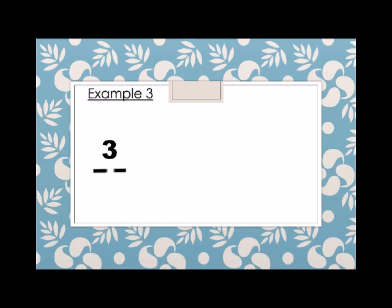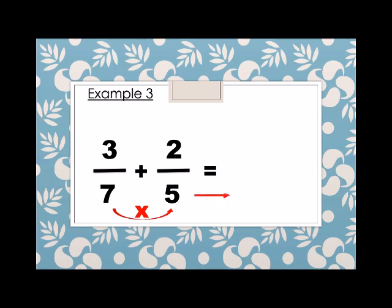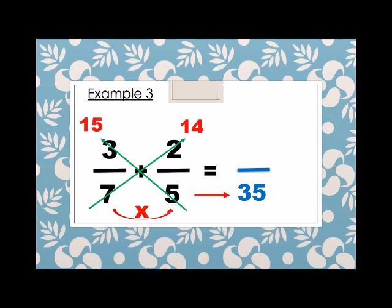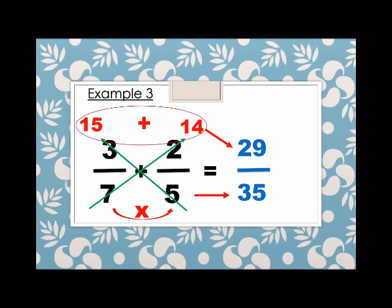Next example. We have 3 over 7 plus 2 over 5. Again, different denominator. So what do we do? Multiply. 7 times 5, we have 35. So the denominator of the answer is 35. Now for the numerator, we cross multiply: 7 times 2 is 14, and 5 times 3 is 15. And then we add. So 15 plus 14 is 29. Therefore, 3 over 7 plus 2 over 5 is equals to 29 over 35.